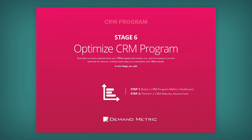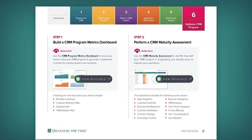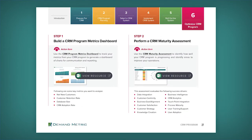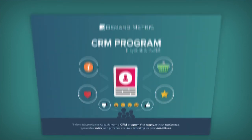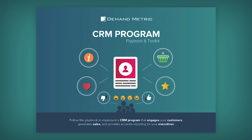Lastly, in stage number six, we're going to optimize your CRM program. First, we're going to start by building a CRM program metrics dashboard, and then performing a CRM maturity assessment. Remember, you can access all of these resources in a single page at the start of this guide and on its own with the CRM program framework. Succeed with your CRM strategy by downloading and leveraging this playbook today.